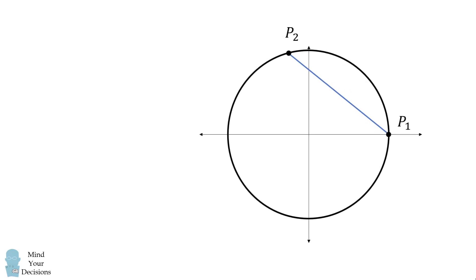Now, what are the polar coordinates of these points? p1 is at 1, 0 and p2 is at 1, theta.